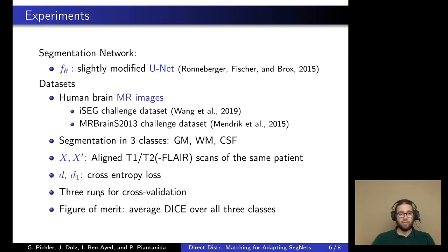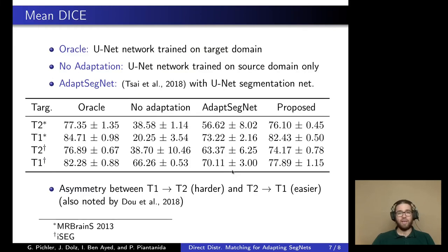The cross-entropy loss was employed and we performed three runs for cross-validation, reporting the average Dice coefficient over the three classes as our figure of merit. Our proposed approach is compared to an oracle — the segmentation function trained only on target domain data — a no-adaptation baseline trained on source domain only, and the previously mentioned AdaptSegNet from 2018 with the same U-Net. You can see that we outperformed the adversarial approach by quite a margin each time, and our approach also appears more stable during training, as indicated by the empirical standard deviation.